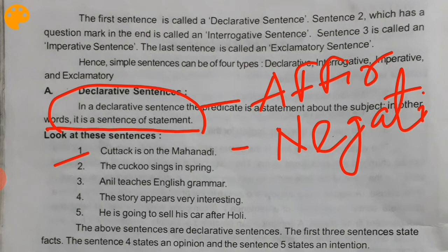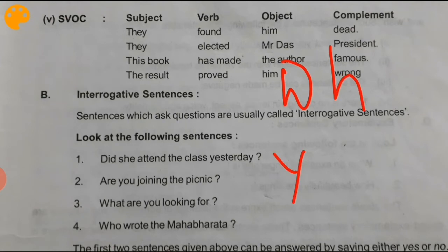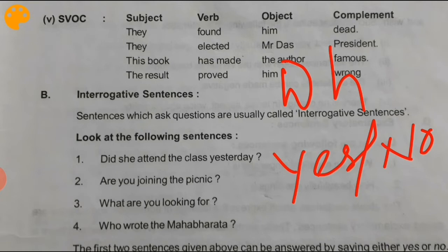So that is the declarative sentence — it has two types. Now the interrogative sentence: how can you identify whether a sentence is interrogative? Interrogative sentences are also of two types: the WH interrogative and the yes/no interrogative.